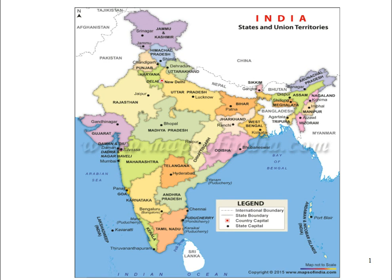Why is it so? India is a very large country. There are quite a few states which are larger than countries like Bhutan and Bangladesh. India is the second most populous country in the world and the seventh largest by area in the world.